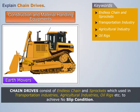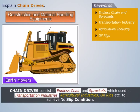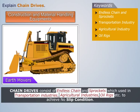Chain drives consist of endless chain and sprockets and are used in transportation industries, agricultural industries, oil rigs, and more to achieve no slip condition.